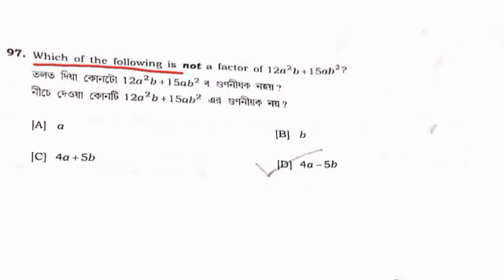Which of the following is not a factor of 12A squared B plus 15AB squared?